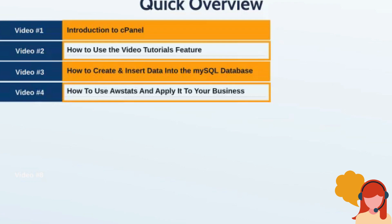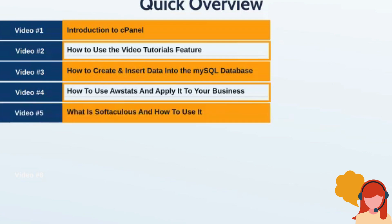Video number four: we're going to talk about how to use AWStats, which is a statistics program that analyzes and shows you what is happening inside your website, and we'll talk about how to apply it to your business. Video number five: we're going to talk about what Softaculous is and how to use it.